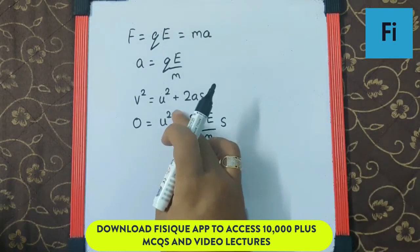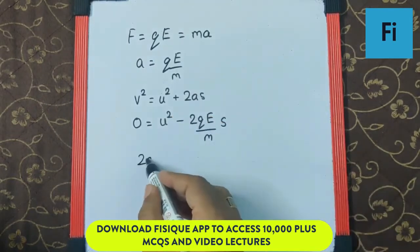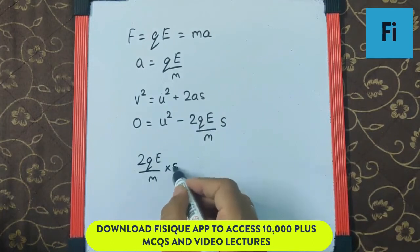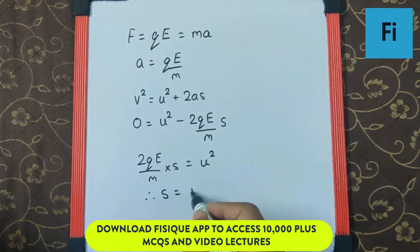This is retardation, which means it is going to be negative. So I can write 2QE by M into S as u², which means S is going to be Mu² by 2QE.